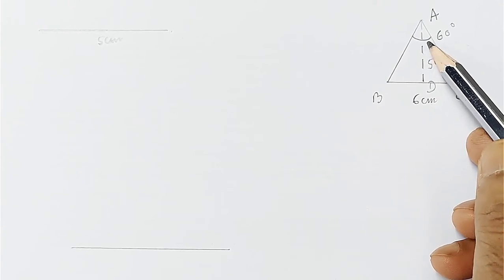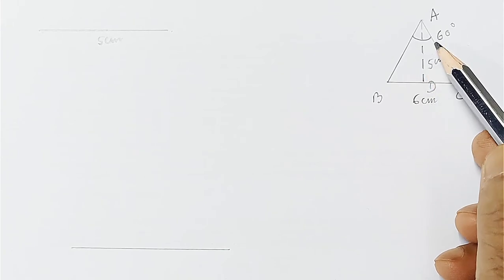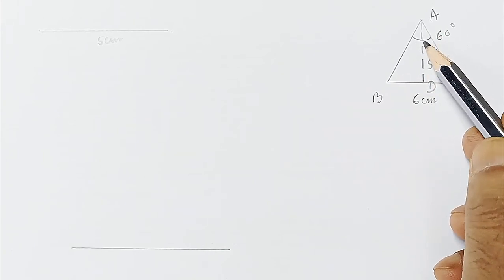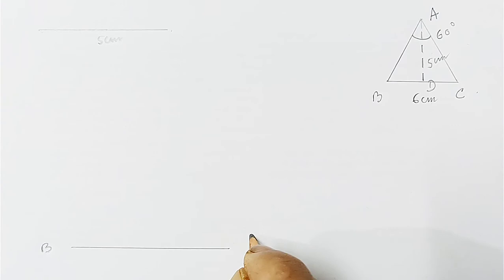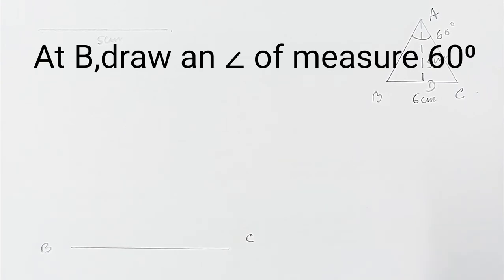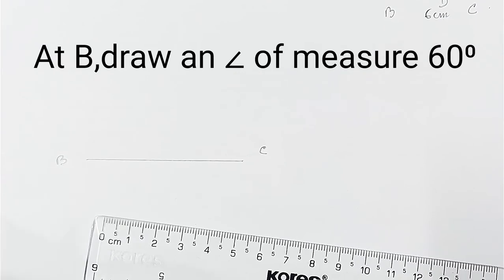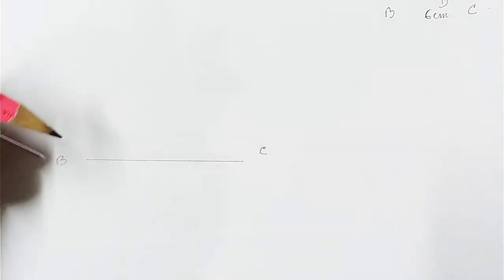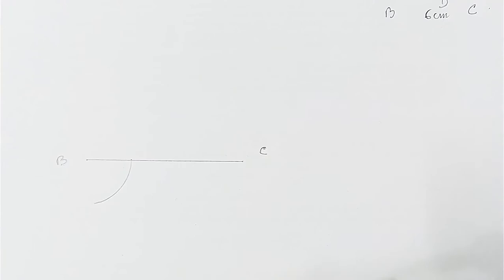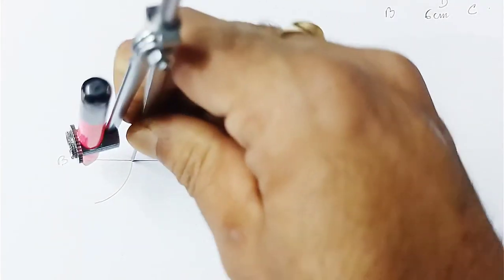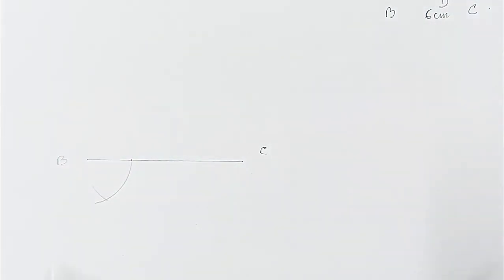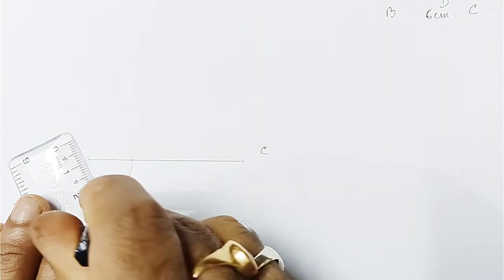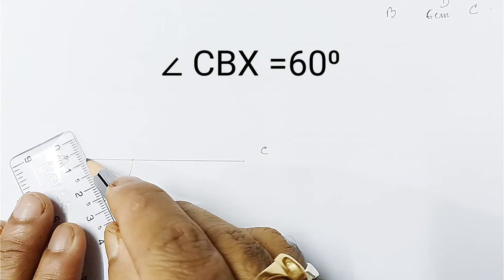Though it is given that angle A equals 60 degrees, we have to draw this angle at B. So this point is B and this point is C. At B, draw a 60 degree angle — take a compass, draw an arc, then draw another arc with the same measurement from that point and cut here. This angle will be 60 degrees. Join the two points to get a ray.